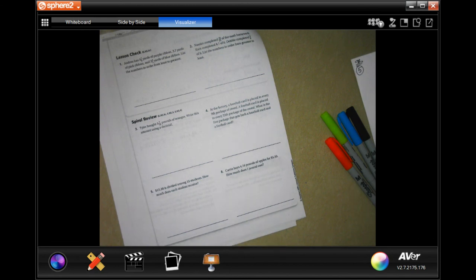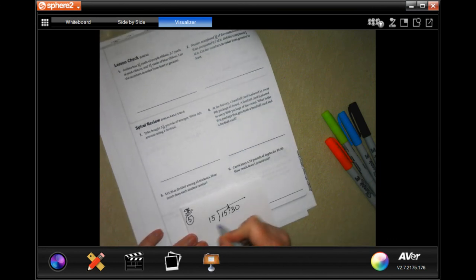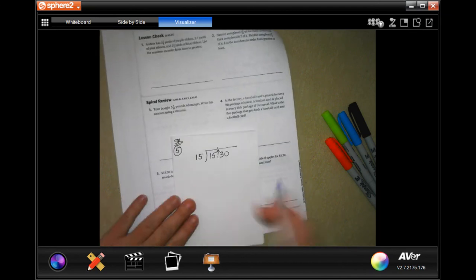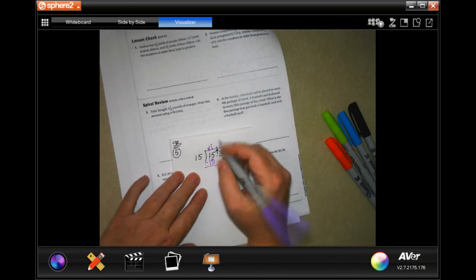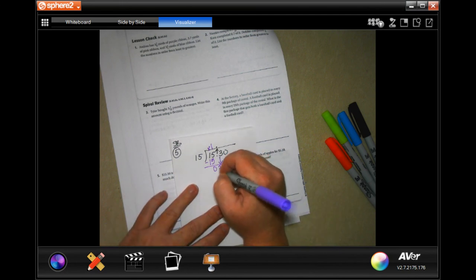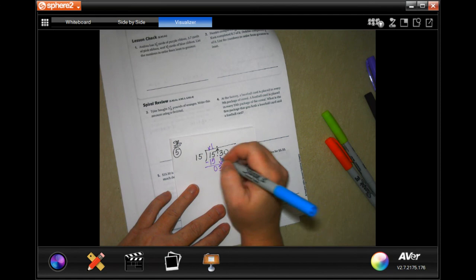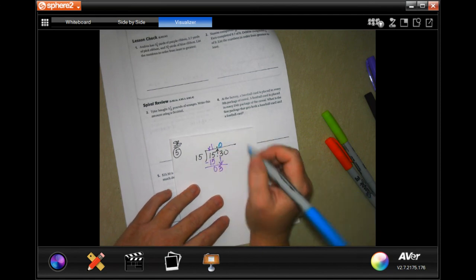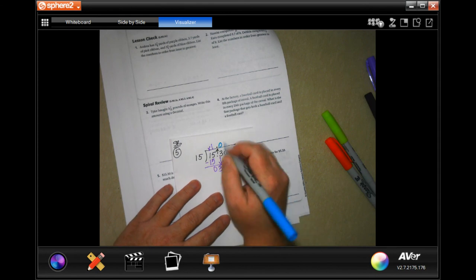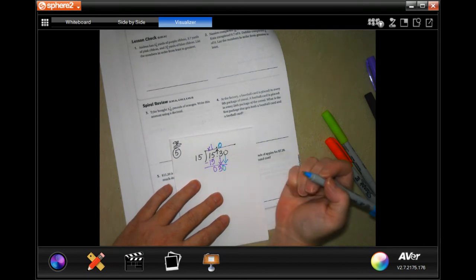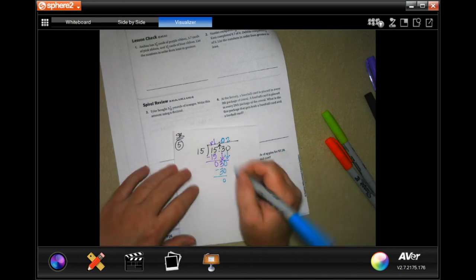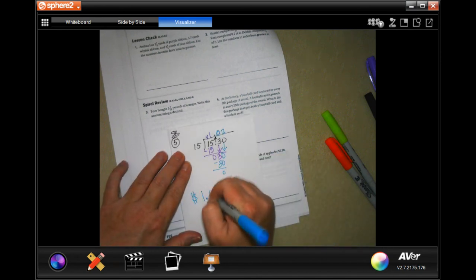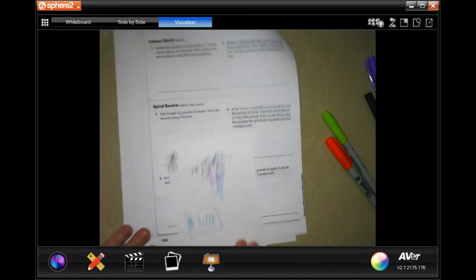Number 5 says $15.30 is divided among 15 students. How much does each student receive? So, 15 is not going to go into 1, but it will go into the 15 ones. That's 15. Subtract. I get 0. I'm going to bring down my 3. 15 is not going to go into 3, so I have to put a 0 in. 0 times 15 is 0, so I'm not going to do all that. I'm just going to go ahead and bring down my other 0. 15 goes into 30 twice. That is 30. Subtract. We get 0. So, each person will get $1.02.